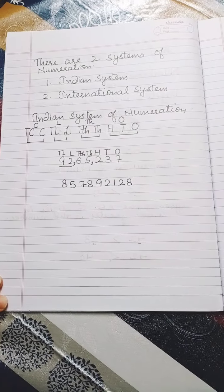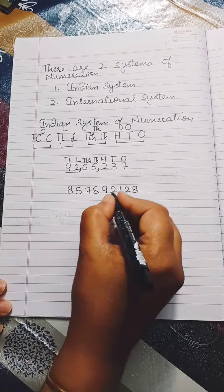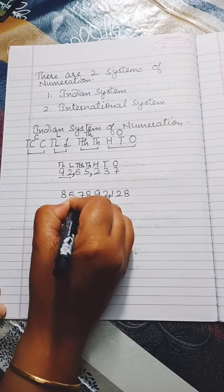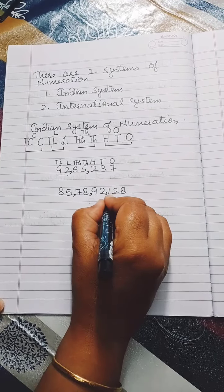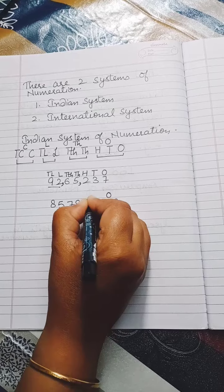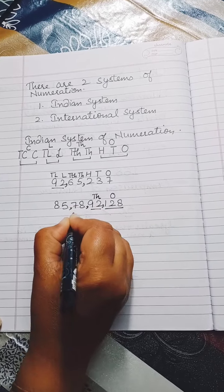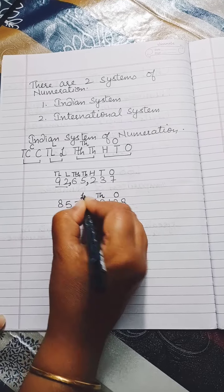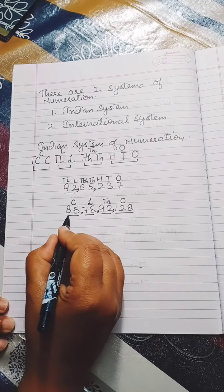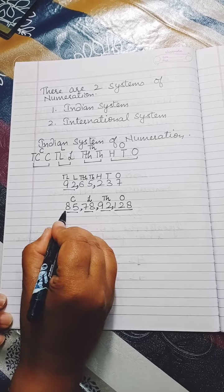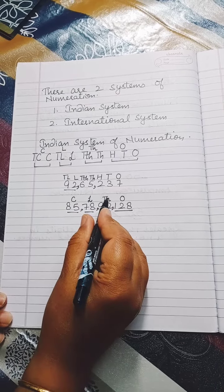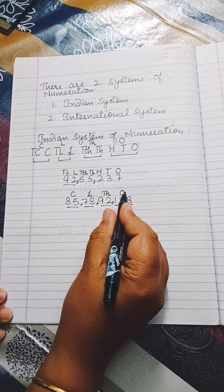To place commas in the Indian system, we count three digits from the right and place a comma, then every two digits after that. The periods are: ones period, thousands period, lakhs period, and crores period. For example, the number 85,78,92,128 is read as eighty-five crore seventy-eight lakh ninety-two thousand one hundred twenty-eight.